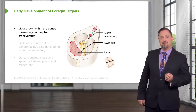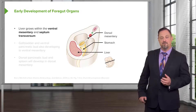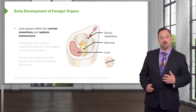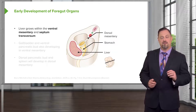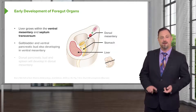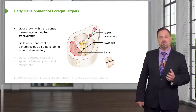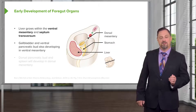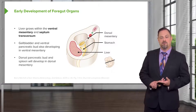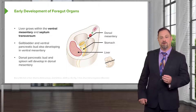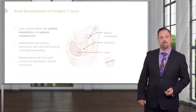In particular, we've got the liver developing into the septum transversum and the ventral mesentery that are located anterior to the stomach. The gallbladder and ventral pancreatic bud are also present and inferior to the liver. We can't see them in this illustration, but do remember that they are there, whereas the dorsal pancreatic bud and the spleen will be developing within the dorsal mesentery.